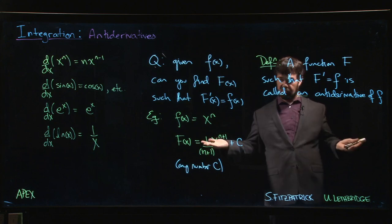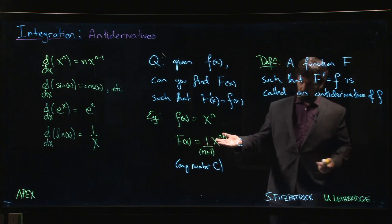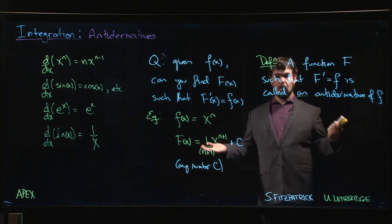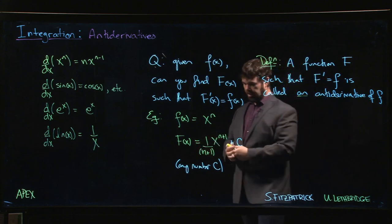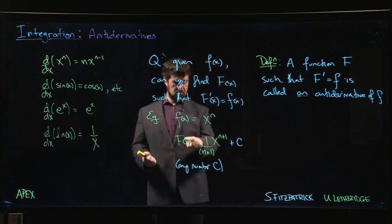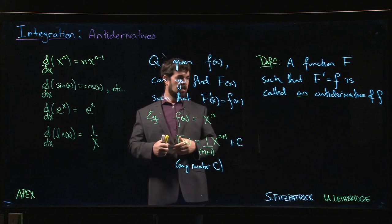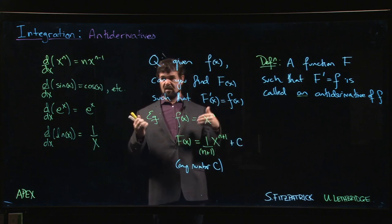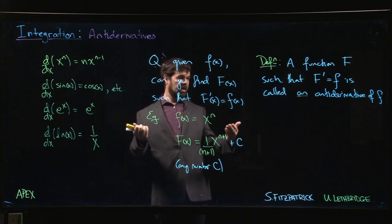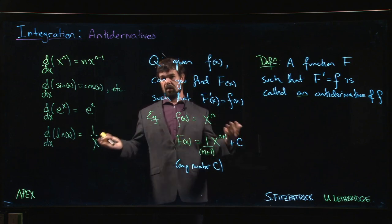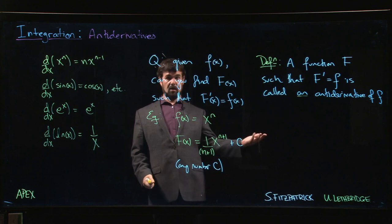Mean value theorem says their difference has to be a constant. So although in principle there could be many different antiderivatives, we know what they all are. We know that every antiderivative can be obtained by adding a constant to the one you've already found. So yes, in some sense there's no unique answer here, but we can classify all the answers. Once you have one antiderivative, all the other ones are obtained by adding a constant to the one that you have.